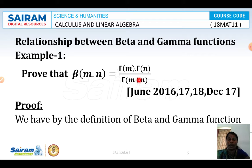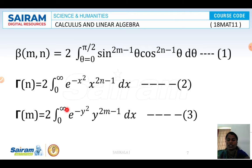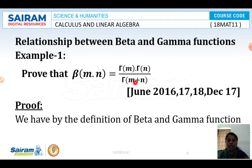We define gamma(n) as per the definition, and then replace n with m to get another relation, and also write gamma(m plus n). So gamma(n) equals 2 times the integration from 0 to infinity of e power minus x squared into x power (2n minus 1) dx. Similarly, gamma(m) equals 2 times the integration from 0 to infinity of e power minus y squared into y power (2m minus 1) dy. And gamma(m plus n) equals 2 times the integration from 0 to infinity of e power minus r squared into r power (2(m plus n) minus 1) dr. These are equations 2, 3, and 4 respectively.